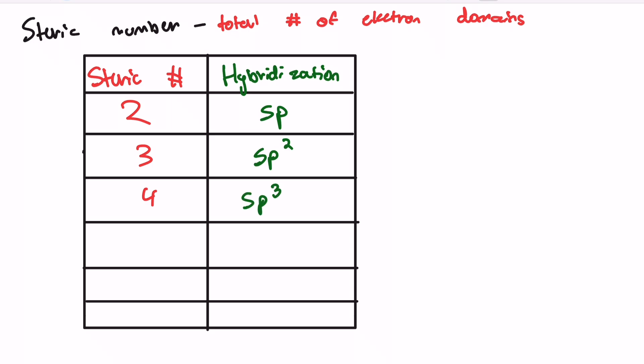And after that, when we go to 5, we need to jump up to a higher sublevel. So this would have a hybridization of sp3d. A steric number of 6 would then be sp3d2. And in theory, the sequence will continue in this manner forever. Although for AP chemistry, you'll almost never go beyond a steric number of 6.